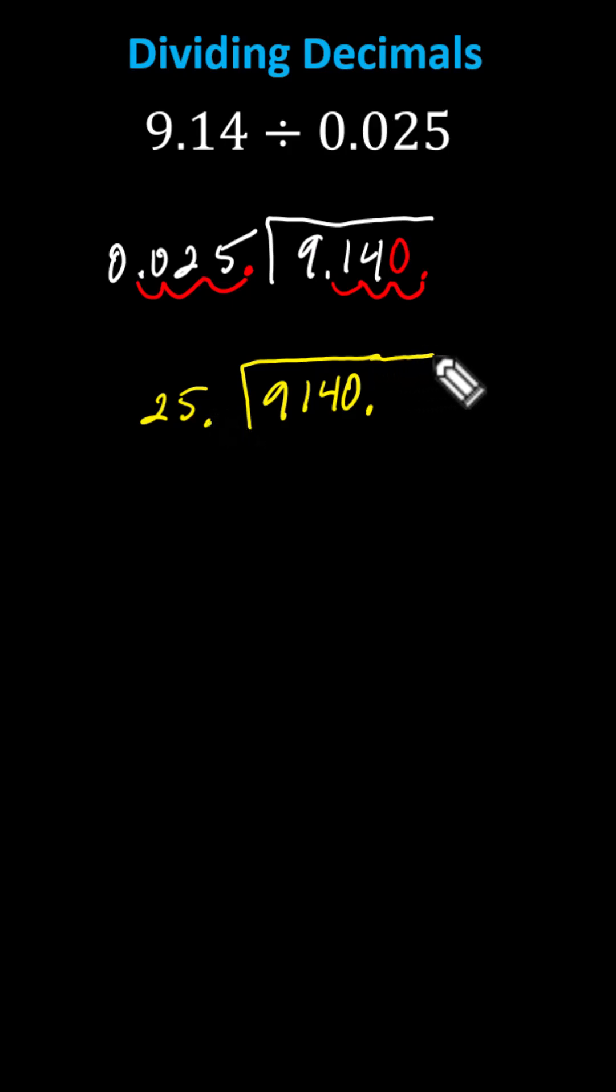Before we begin dividing, though, just in case we need it, we move the decimal point of the dividend up to the quotient, and now we divide like we normally do.